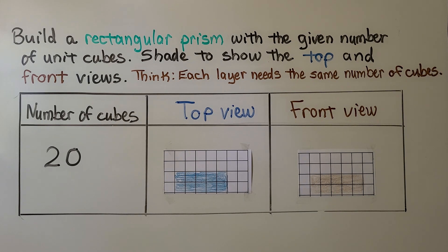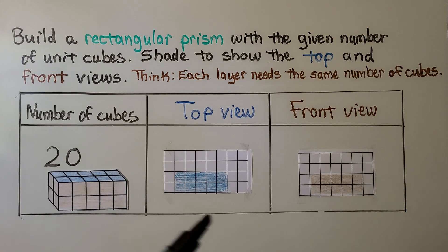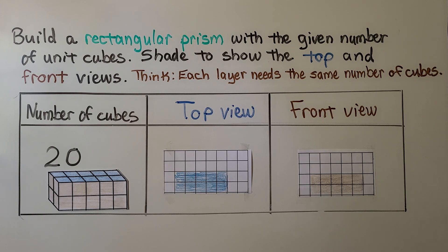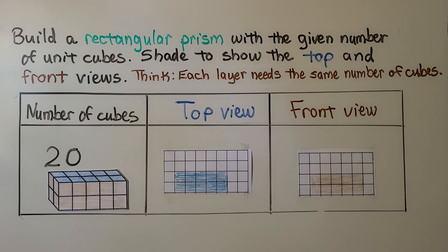What it would actually look like is like this. The side has got four. We would have ten plus ten — that's twenty. But the top view and the front view won't always look the same; that only happens sometimes.